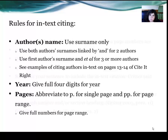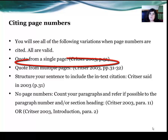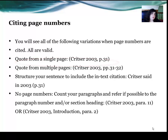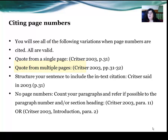Here are some examples of citing page numbers. For a quote from a single page, you have the author's surname — Christer — the year 2003, comma, p.31. For multiple pages, it's Christer, 2003, comma, pp.31–32. That is the page range.